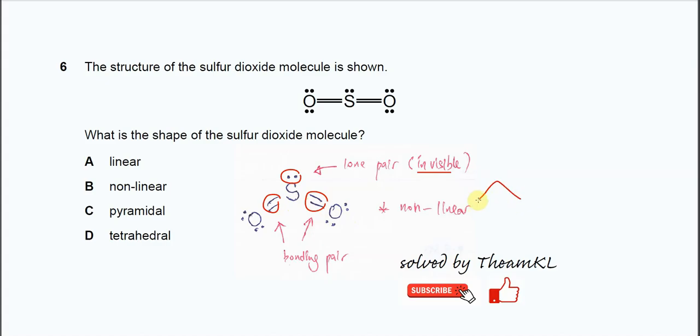So SO2 now looks like a V shape: oxygen, sulfur, and oxygen. The lone pair is invisible. That's why we get non-linear because of the three electron pairs surrounding this sulfur.